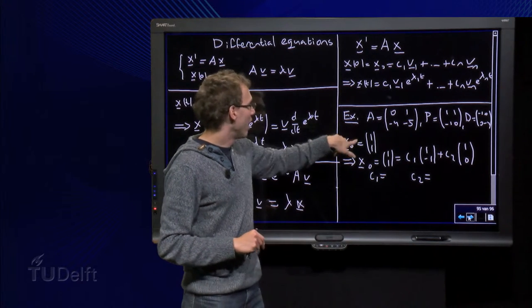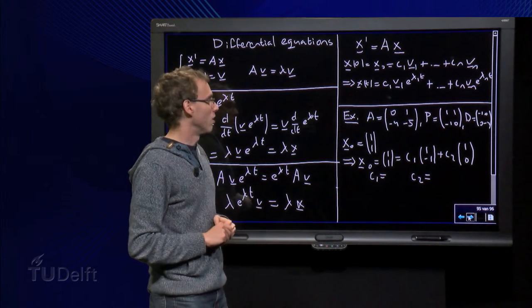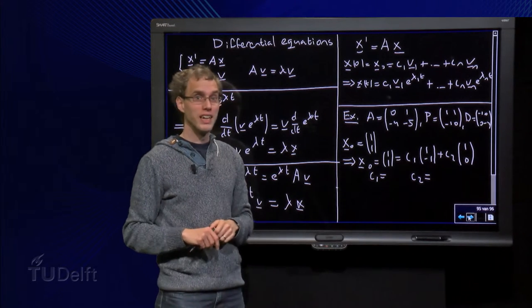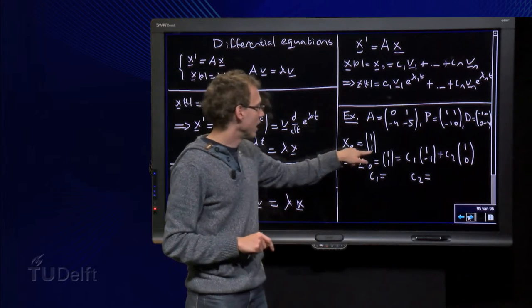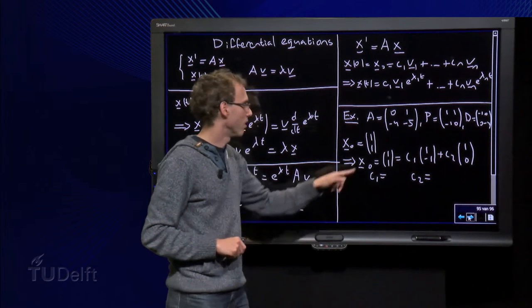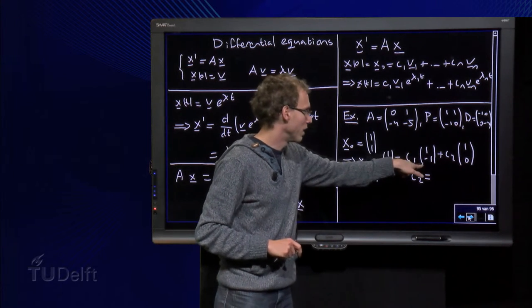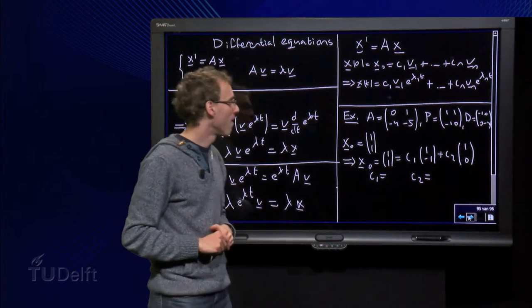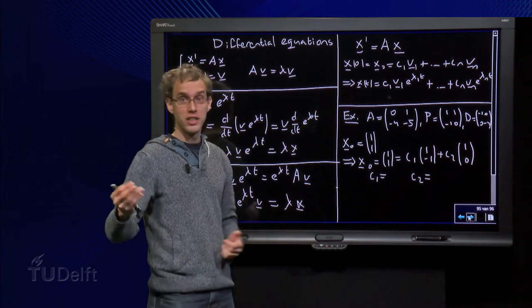And suppose now I have an initial condition (1,1). So how can I find the solution here explicitly? I have to express (1,1) in terms of the eigenvectors (1,-1) and (1,0), so I write (1,1) equals c1(1,-1) plus c2(1,0), and I have to find c1 and c2.